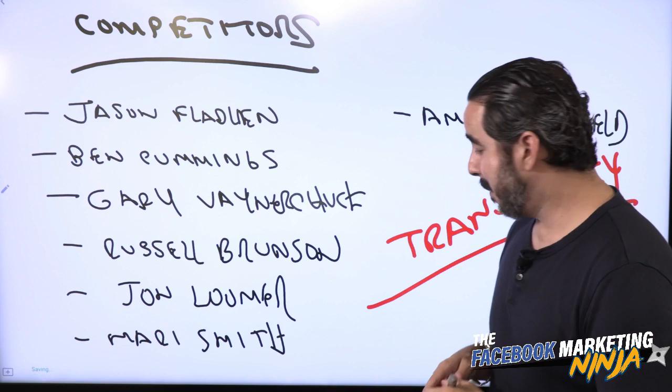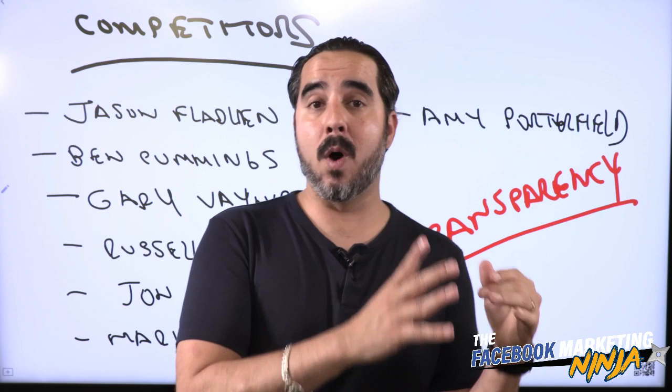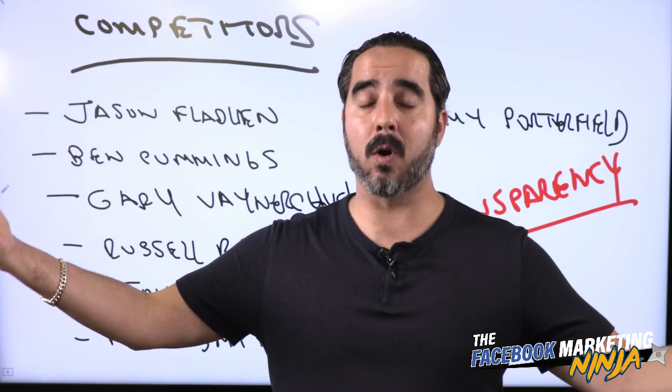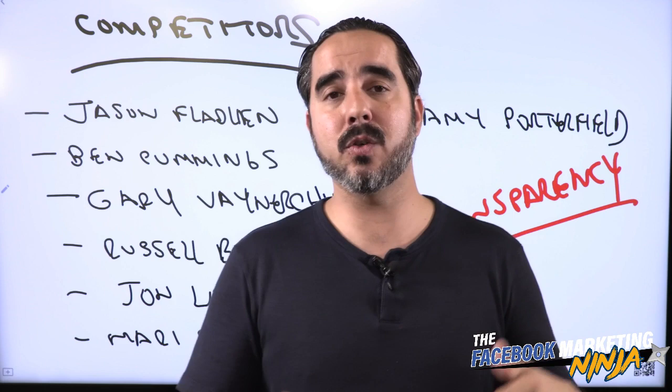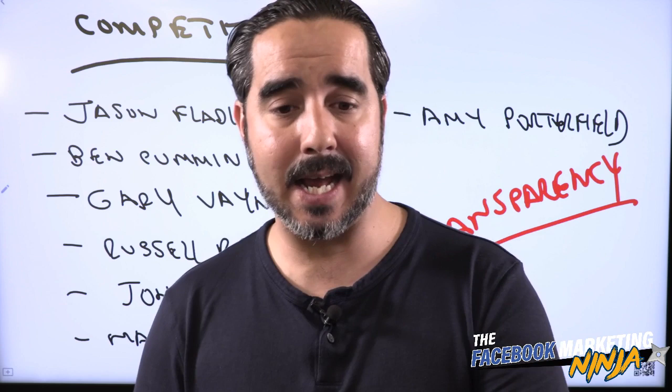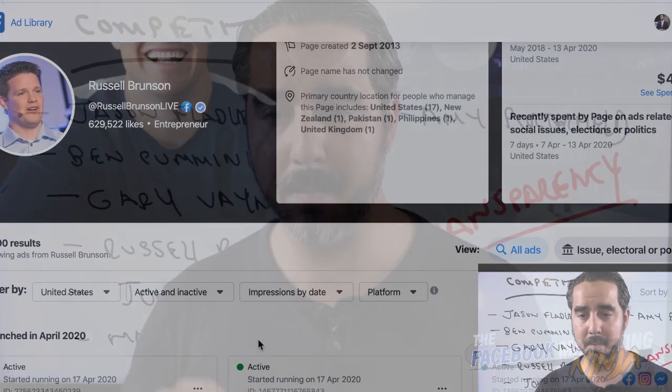Nothing is confidential anymore — not what Trump does, not what the government does, not what I do, not what you do. You can find out exactly — to the minute detail — what any competitor is doing on Facebook and Instagram, active ads and inactive ads. It's all public information. Facebook calls this 'transparency' — if you're advertising on Facebook, that information is available to the world.